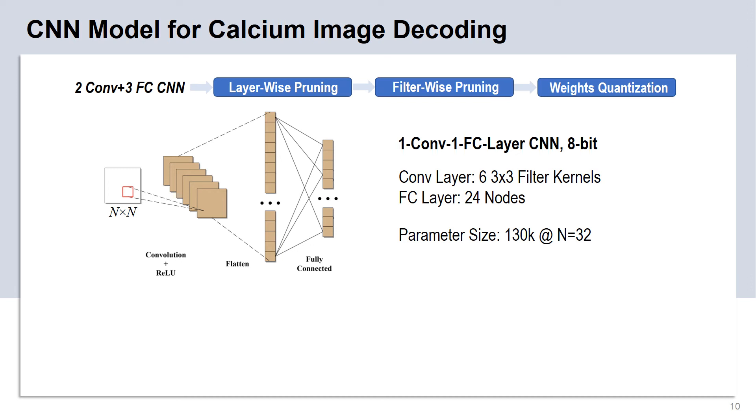We applied consecutive layer-wise pruning, filter-wise pruning, and weight quantization from a three-convolution layer, two-fully connected layer CNN model to derive the simple CNN model. The simple CNN model has one convolution layer and one fully connected layer. The convolution layer has six filter kernels, and each kernel is in 3 by 3 size. The fully connected layer connects the flattened feature maps with 24 output nodes, and each node corresponds to a specific position bin on the linear track. Considering a 32 by 32 input size, the simple CNN model has about 130,000 parameters.